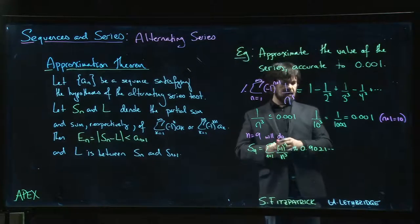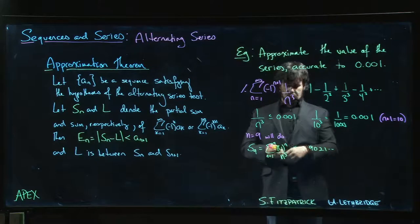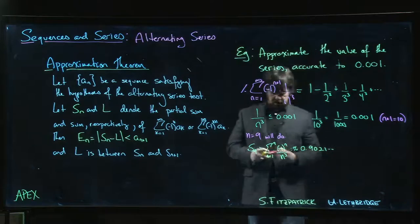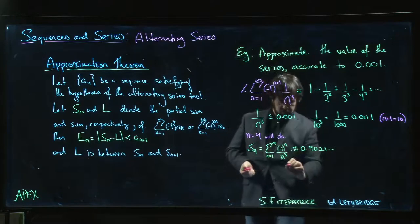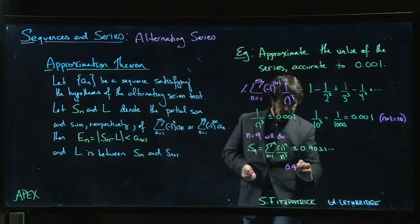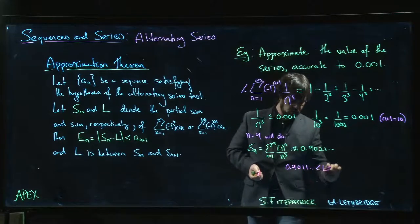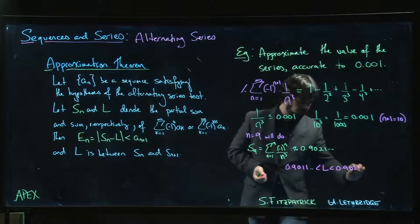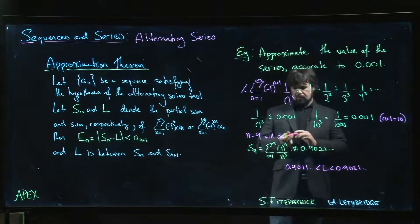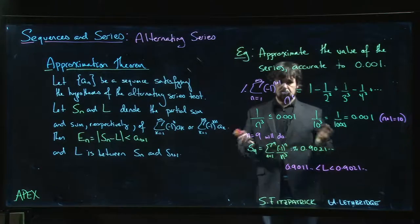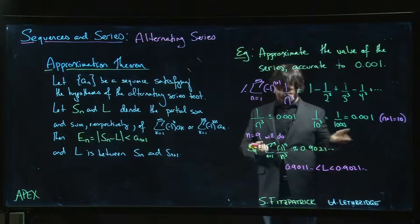When you put n equals 10, you actually get a negative value, so you actually get like 0.9011. So the actual sum is going to be somewhere between 0.9011, whatever the other terms were, and 0.9021. So you get an interval there of the appropriate length that tells you about where the limit is.